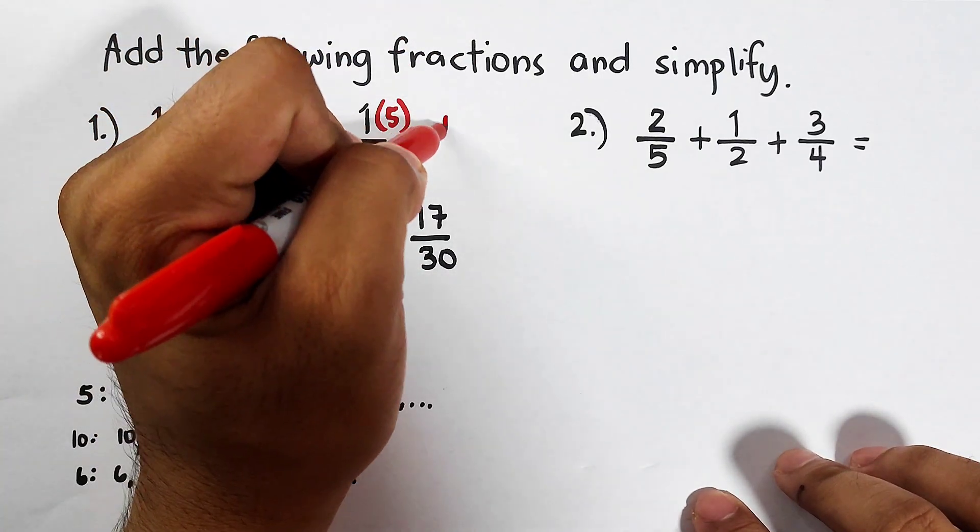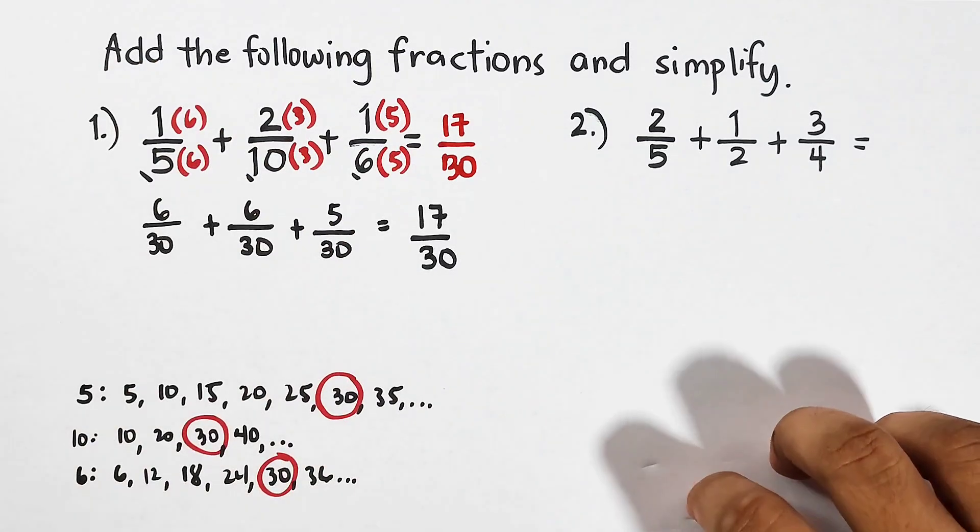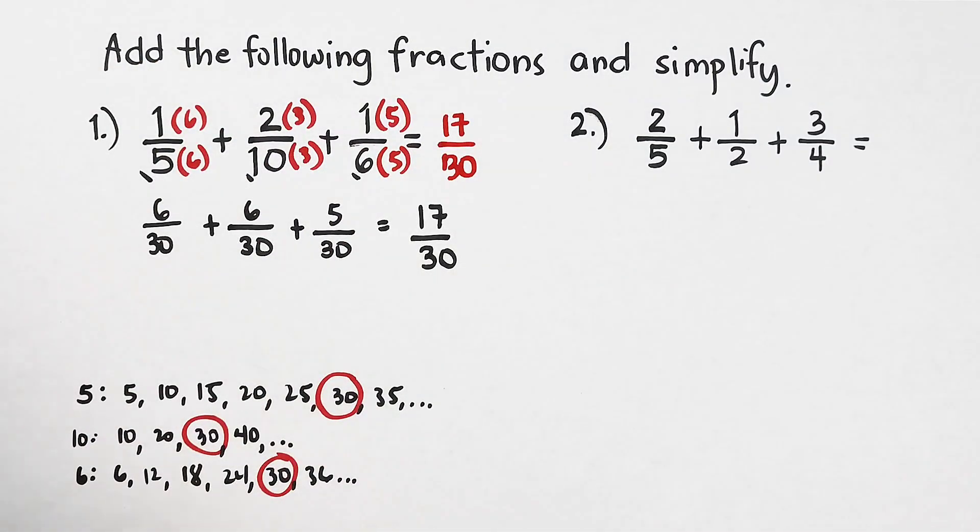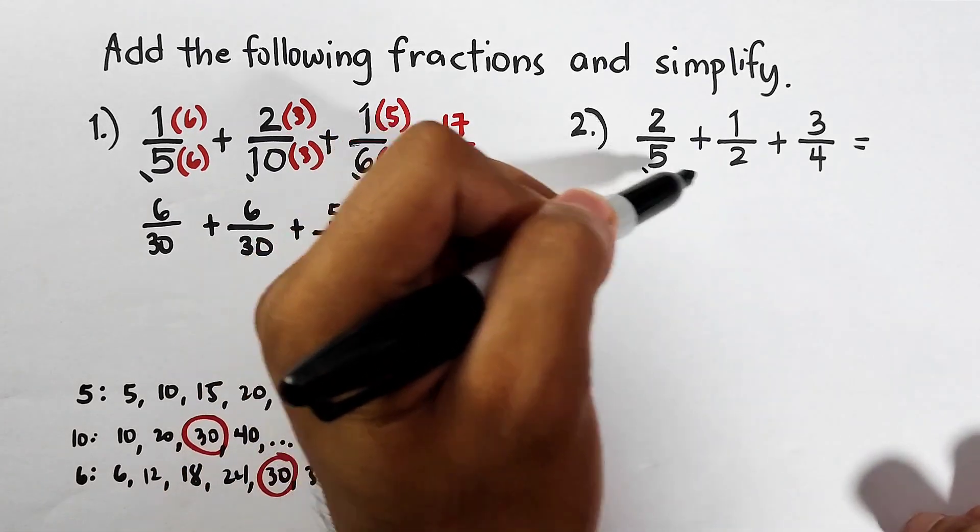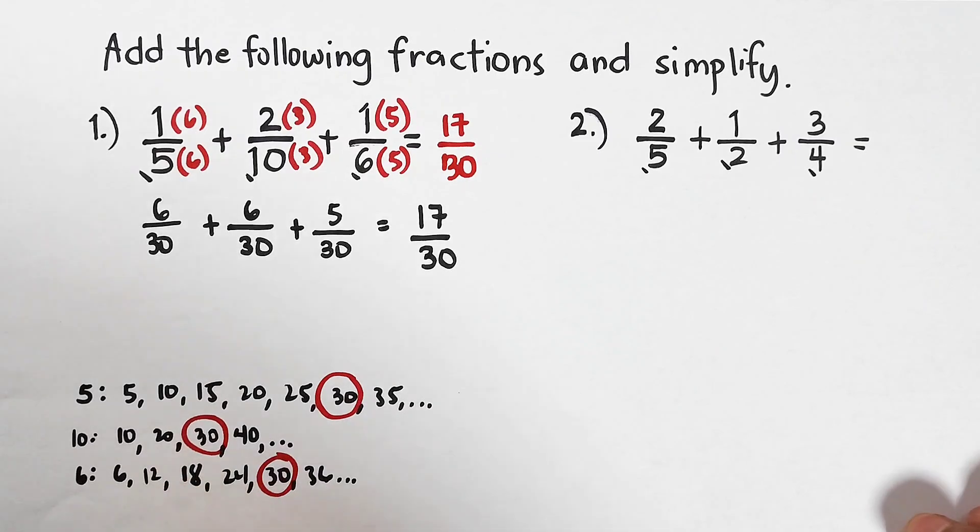Do you think we can still simplify 17 over 30? That's the simplified form already, so our answer here is 17 over 30. Now let's move on with item number 2.